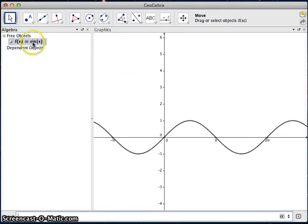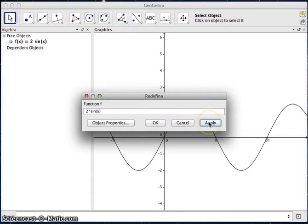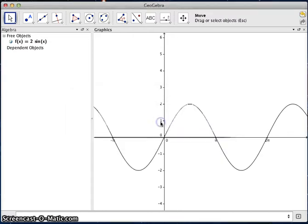Now, maybe you want to do a different function. The easiest thing to do is just double-click on that function, and we can just simply change this. Maybe we want to change this to 2 times Sine X. And we say Apply, and you'll notice it changes that function. And now I've got another one I can change.